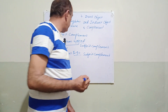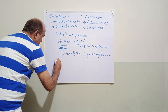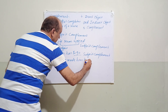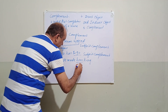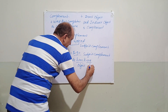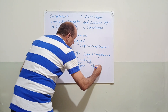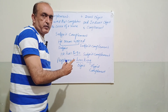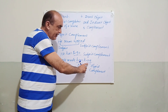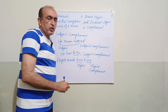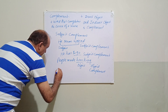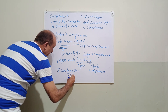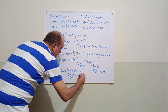There is also object complement. Example: people made him king. Here 'him' is the object and 'king' is basically the complement — so 'king' is called object complement. King is not the object itself, but it completes the sense of the object 'him'.